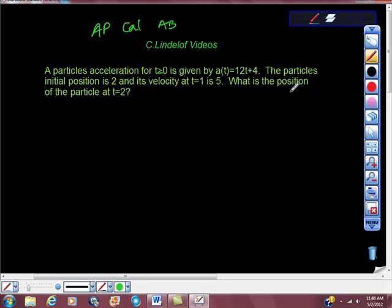The particle's initial position is 2 and its velocity at time 1 is 5. What is the position of the particle at t equals 2? So starting off, we're looking for a position. I realized that acceleration is actually the second derivative of position, so I was going to be going backwards a couple of times.